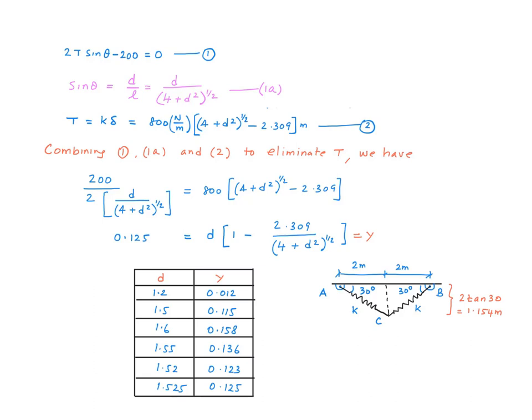And this is what I got for Y, 0.012, which is obviously much smaller than that. So I don't know which way to go, but I know it has to increase. So I went to 1.5 and I got 0.115. I'm in the right direction. So I kept increasing to 1.6 and got 0.158, which is a little bigger than that value.